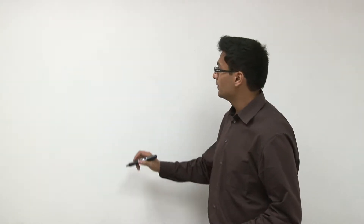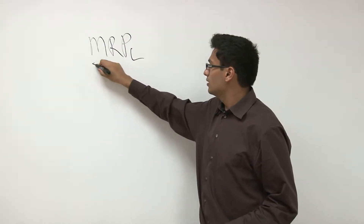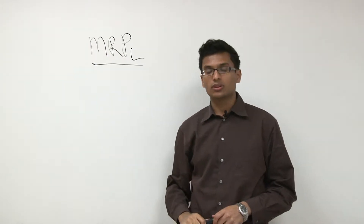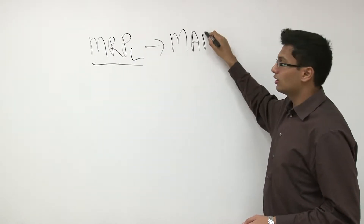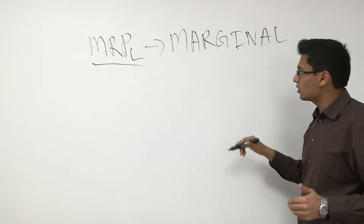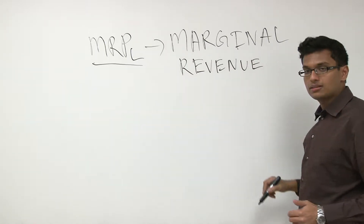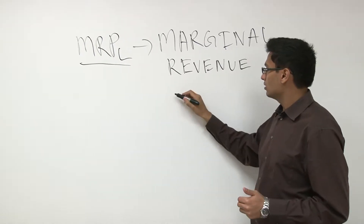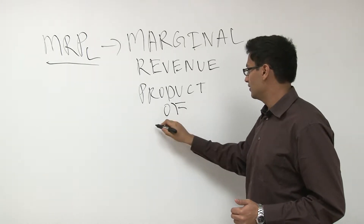Now I want to move on to a new concept called the marginal revenue product of labor, known as MRPL. Why do we use MRPL? It is designed so that employers know when they hire — it helps answer whether adding one unit of labor is worth it.